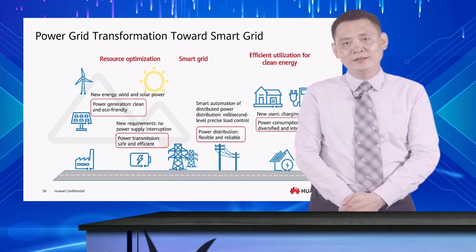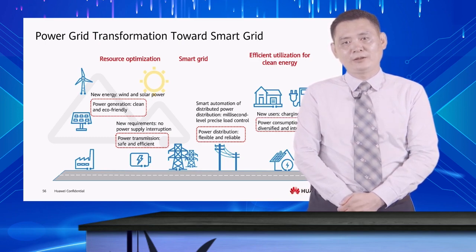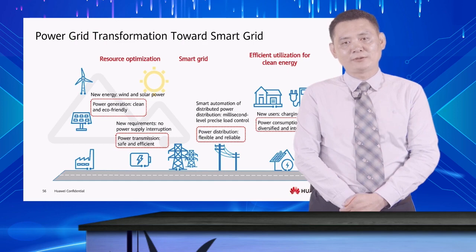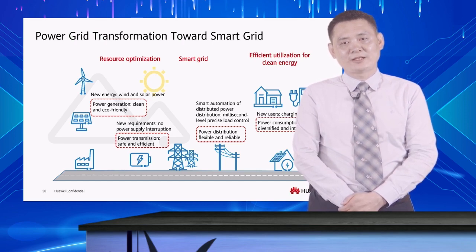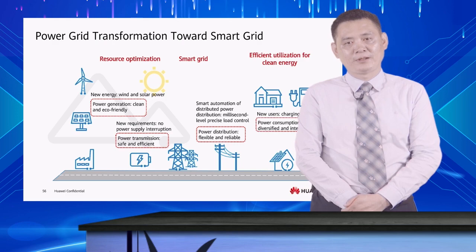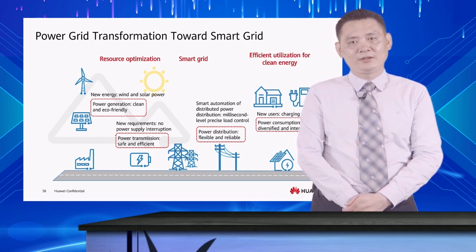For example, new energy such as wind and solar energy is used for power generation, which is clean and eco-friendly. However, this may be unstable — the power generation efficiency may decrease, or power cannot even be generated at night or on cloudy days. Unlike fossil-fuel-based power generation that is continuous and stable, new energy power generation requires secure control over the power distribution network. In addition, there is a new requirement for secure and efficient power transmission: no power supply interruption.